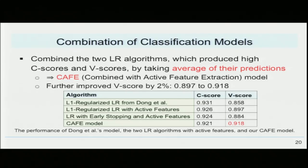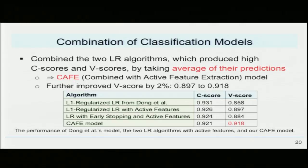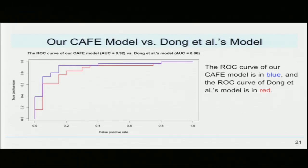Our third optimization technique was the combination of multiple algorithms. We combined our two logistic regression algorithms by taking the average of their predictions, developing our CAFE model — Combination of Algorithms with active Feature Extraction. This combination further improved our V score by 2%, from 0.897 to 0.918. Comparing our CAFE model to Dong et al.'s model, for the same false positive rate, we achieve a higher true positive rate, indicating the robustness and high accuracy of our model.